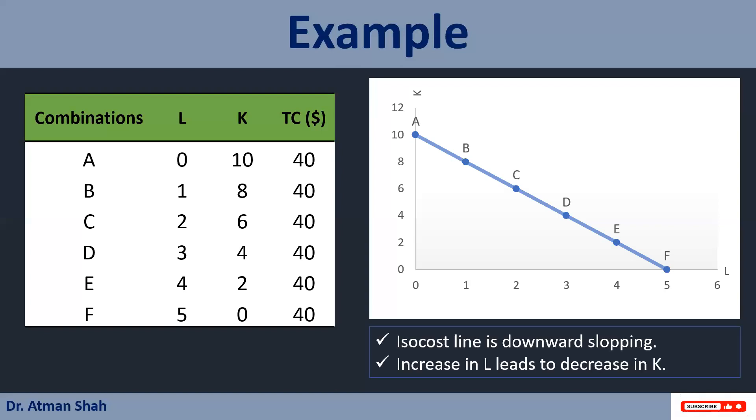So here you can see isocost line is downward sloping factor ratio. That means producer cannot increase both the factors of production simultaneously. So increase in labor units leads to decrease in capital units. And therefore we have downward sloping isocost line. And the slope is factor ratio, that is W upon R or PL upon PK.